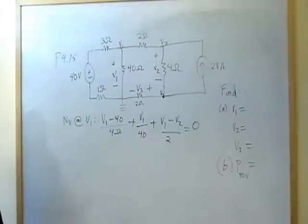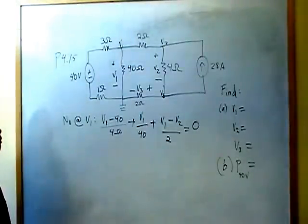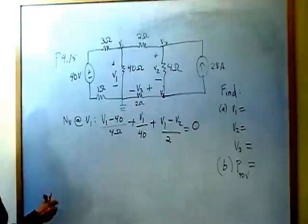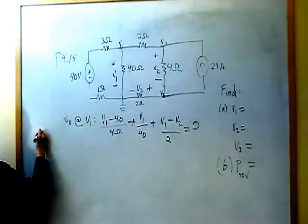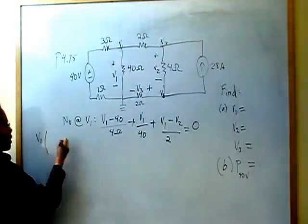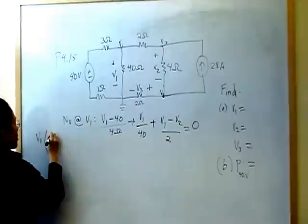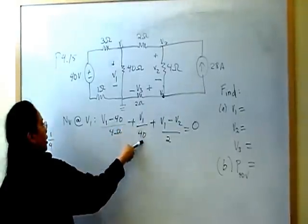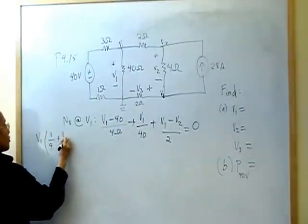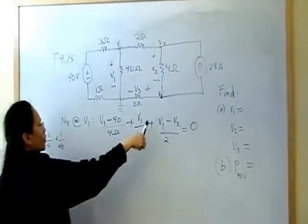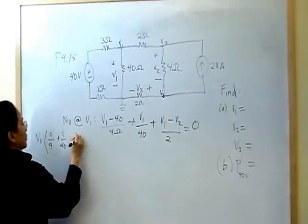Now I'm going to write my first equation for my matrix. So I'm going to group all my V1s together. This one, I have one-fourth. Over here, I have one over 40. Over here, I have one over two, one-half.